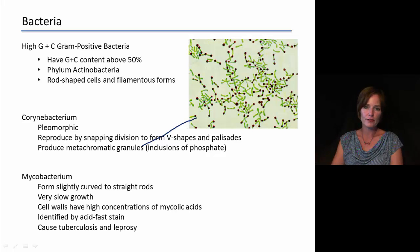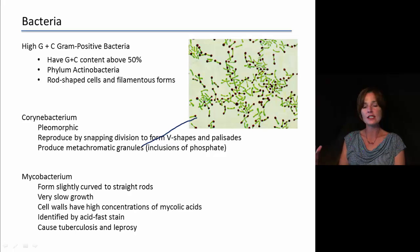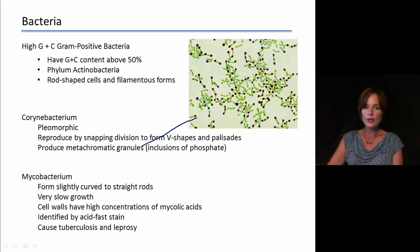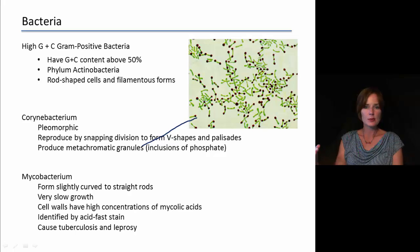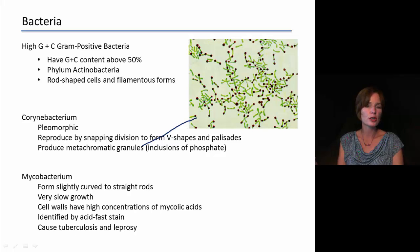Mycobacterium is another group under the high-GC gram-positive category. These form slightly curved to straight rods and have very slow growth — it takes them a long time to divide. Their cell walls have very high concentrations of mycolic acids, which is thought to be why they divide so slowly. These are stained specifically using acid-fast stain, which separates them from other bacteria lacking those special cell walls. Mycobacterium is responsible for causing tuberculosis and leprosy.